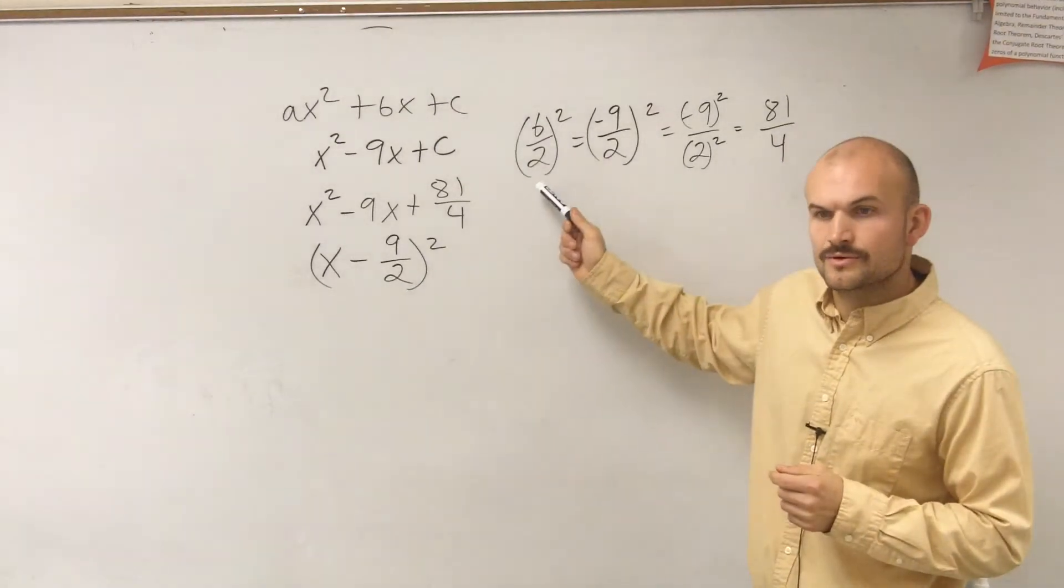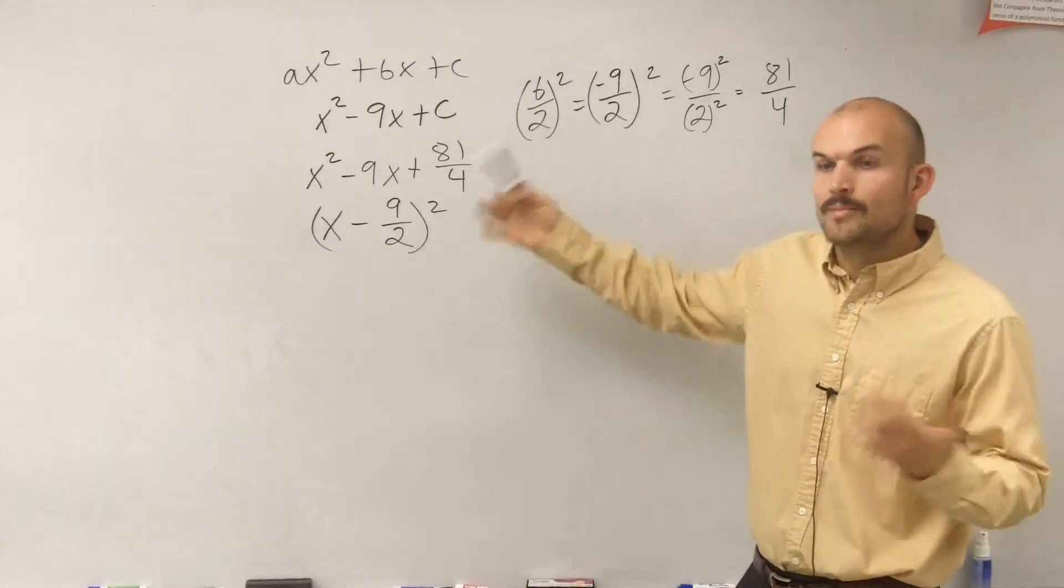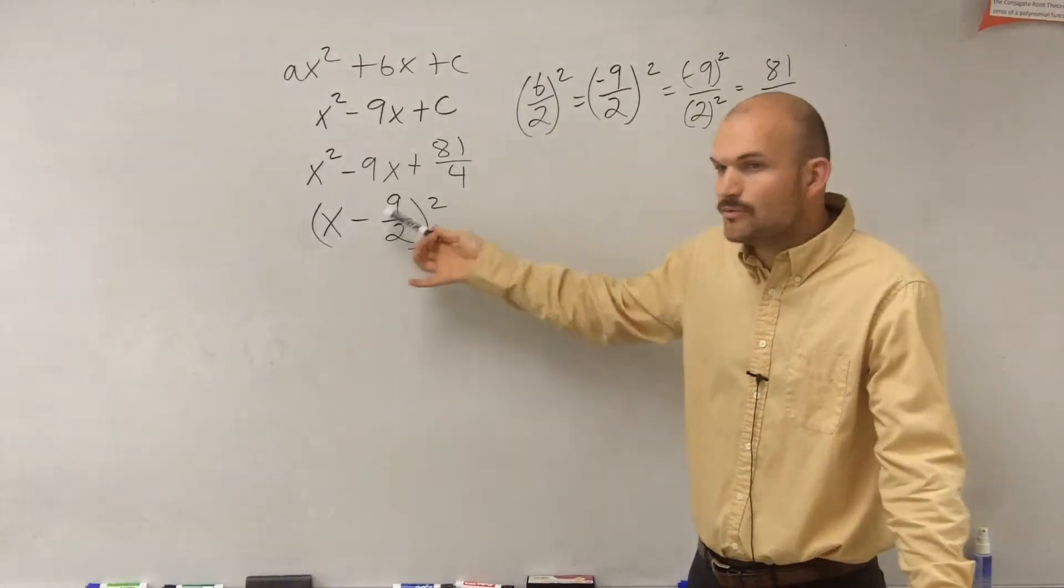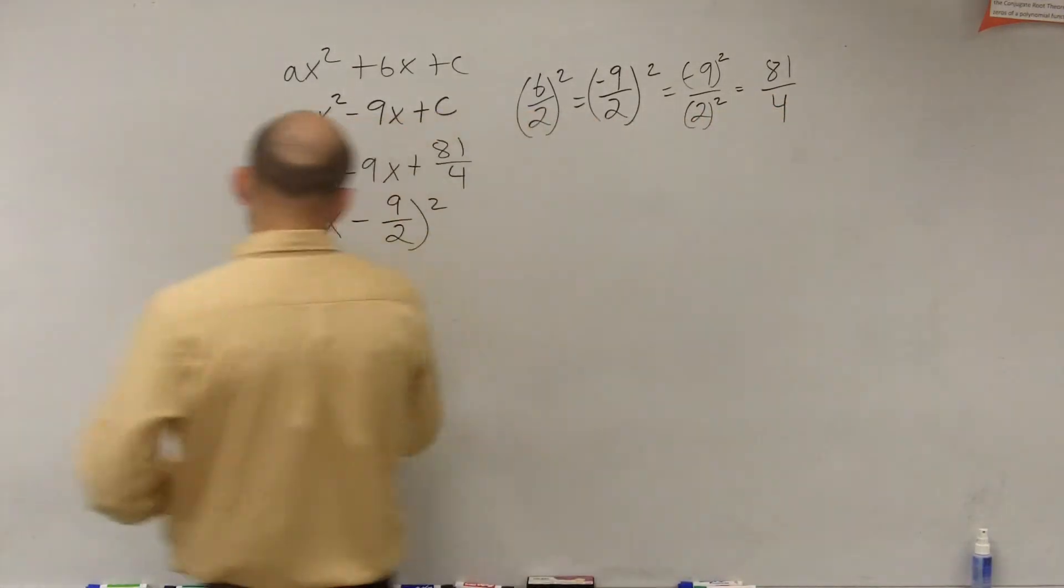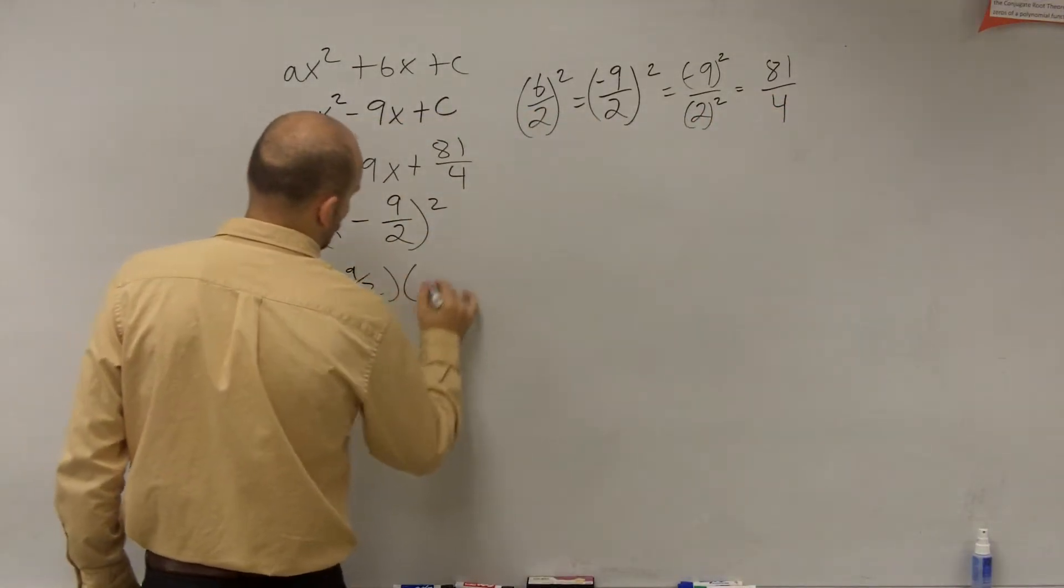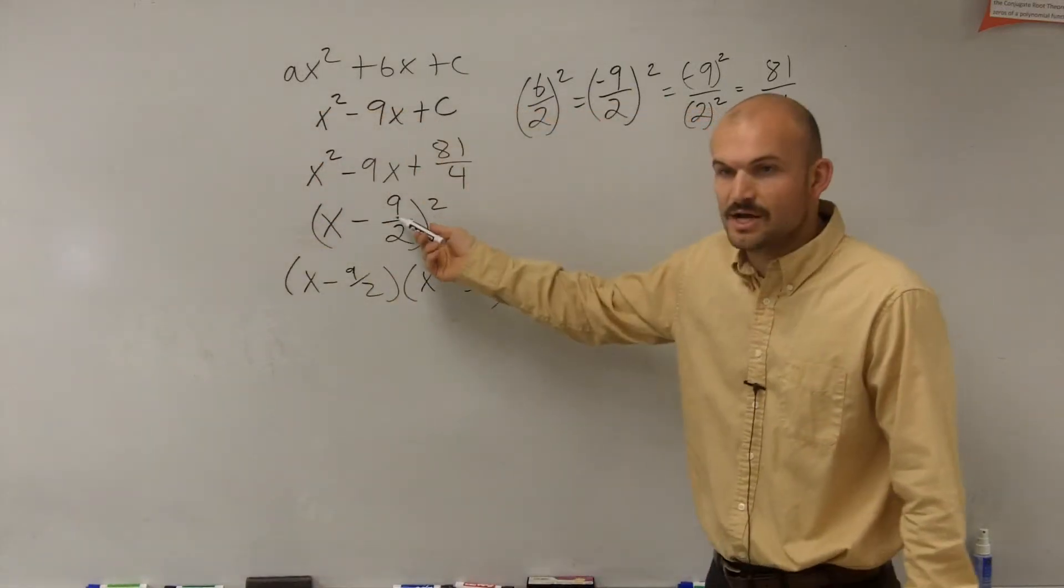I took my b divided by 2. I just took b divided by 2 and put it in there. But remember, why do you get this? Why does that work? Because if you were to write this out, where does this come from? Well, pretend you're doing FOIL.